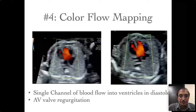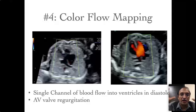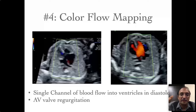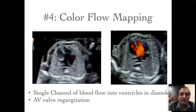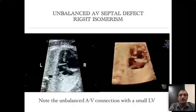The two important imaging points for AV septal defect are: in the diastolic frame you find a large defect in the center — the crux — of the heart, and in the systolic frame you see loss of offsetting or linear insertion of the valves. The entity just shown was a balanced AV septal defect where the two ventricles were equal-sized.